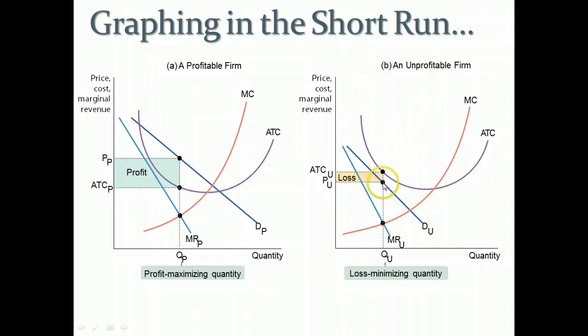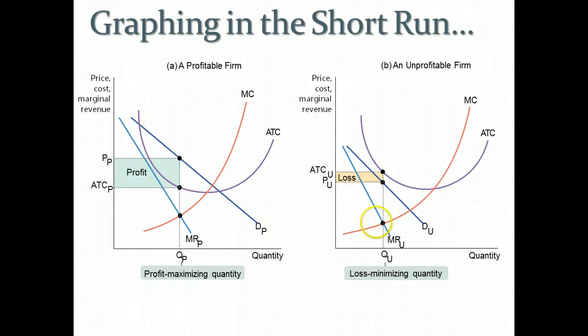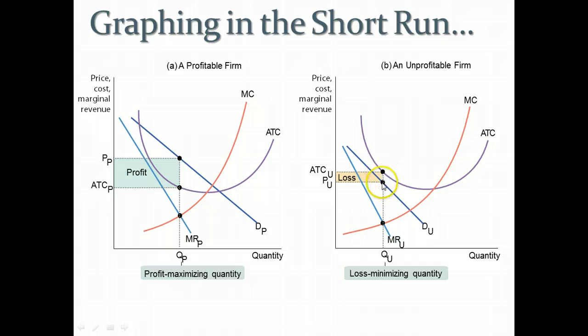And if you look at B, in this case it's a loss because the profit maximizing quantity, where marginal revenue equals marginal cost, is at a point where the quantity is such that the price that people pay is less than average total cost, and so that would be a loss. So from a graphing standpoint, not much different than what you already know.